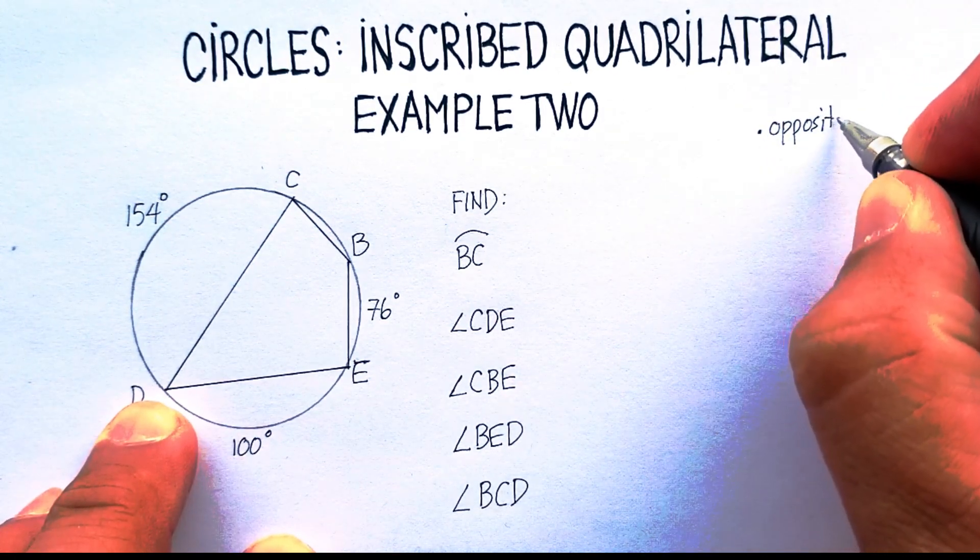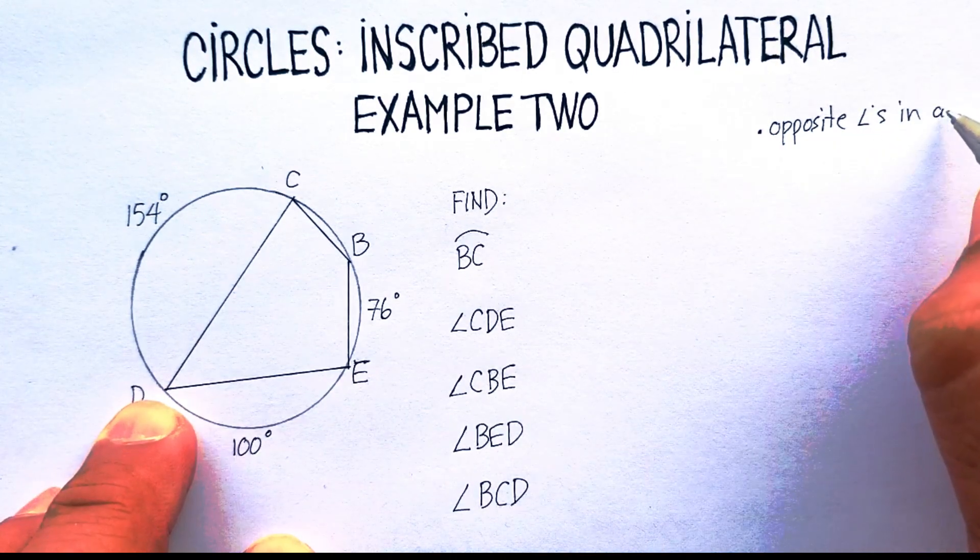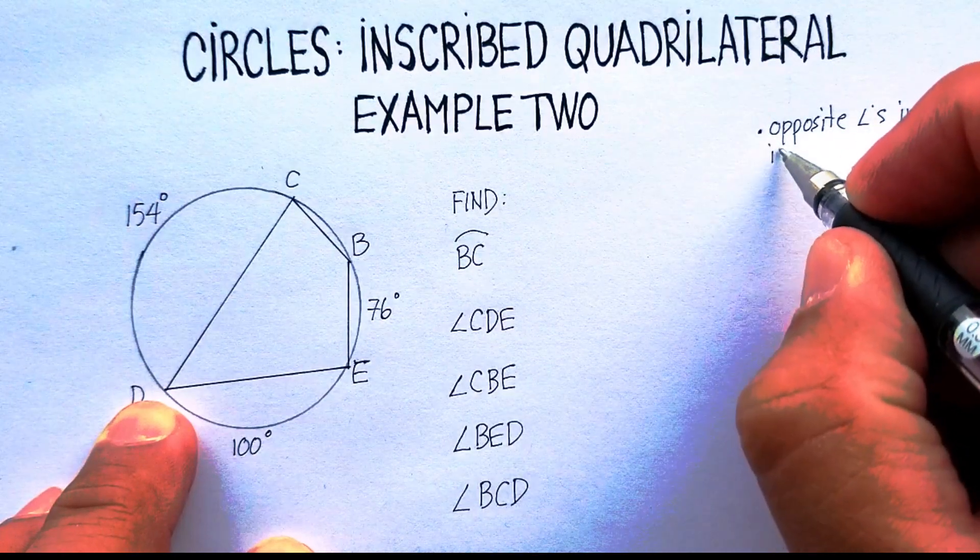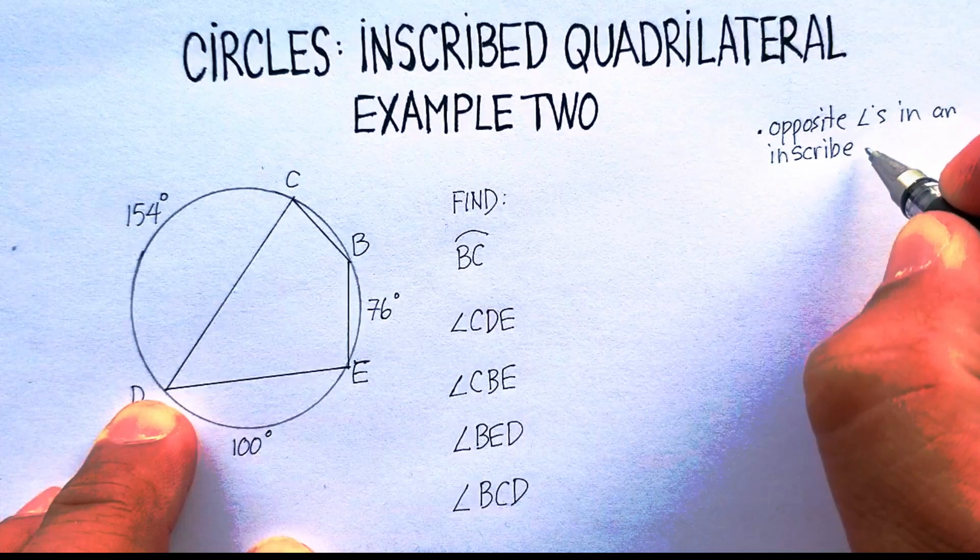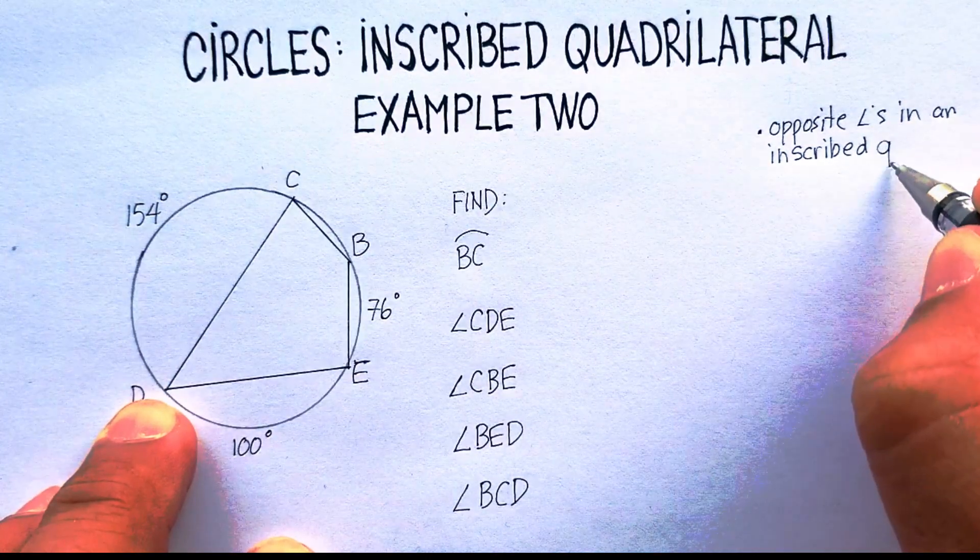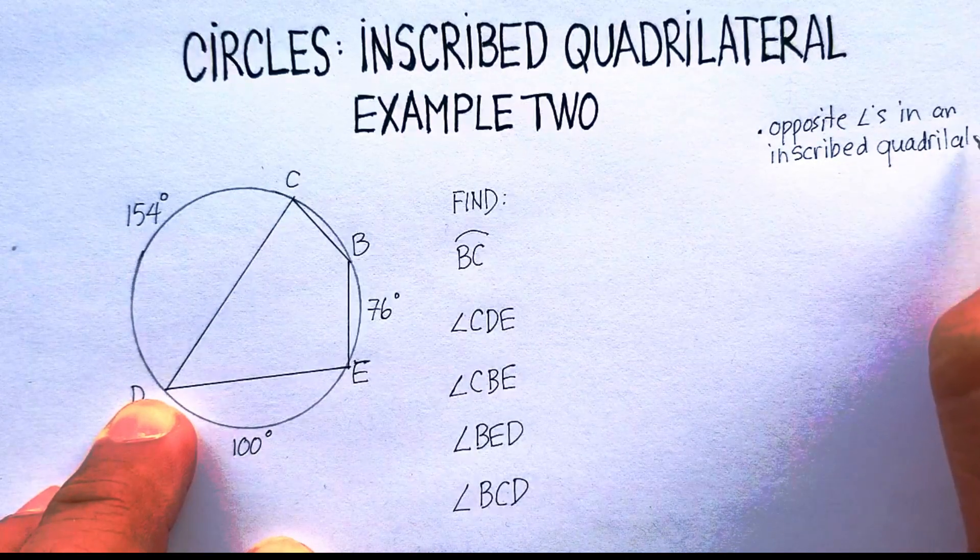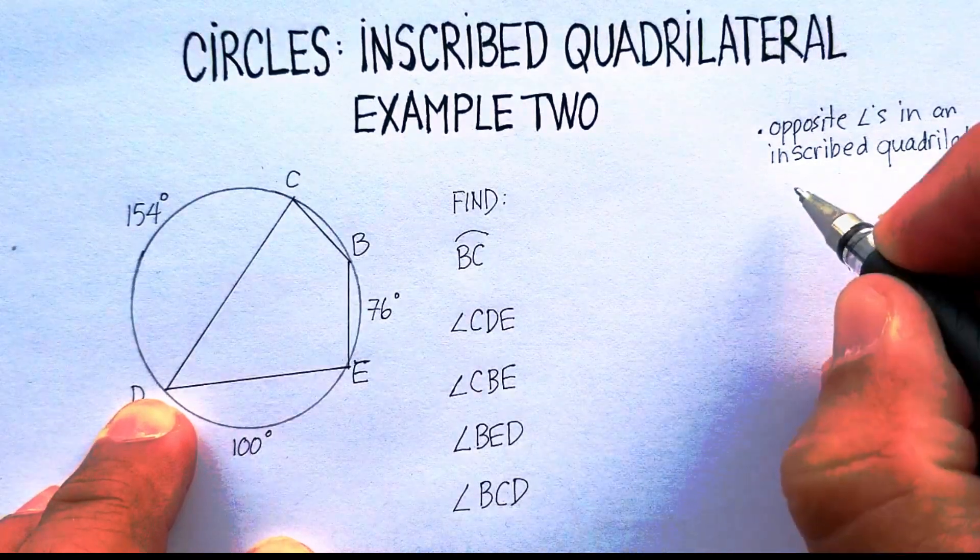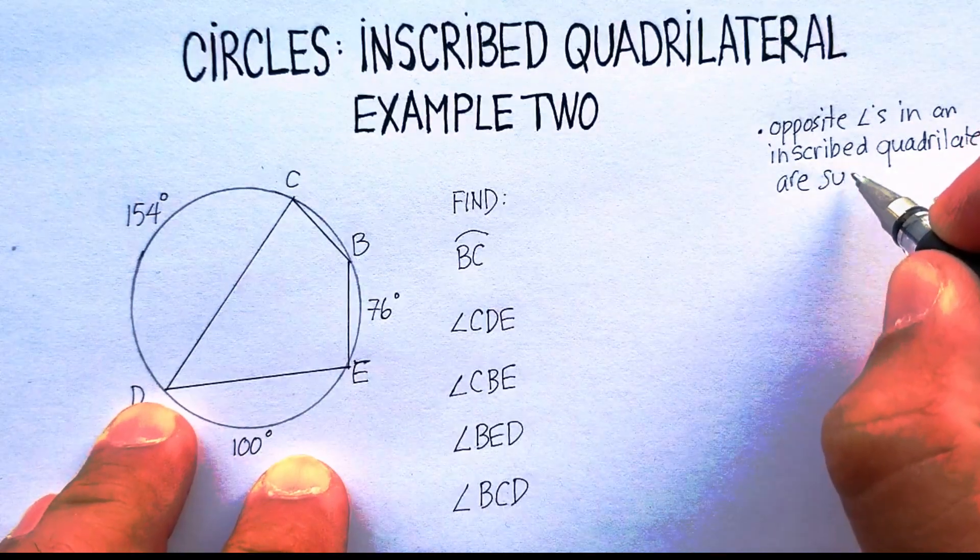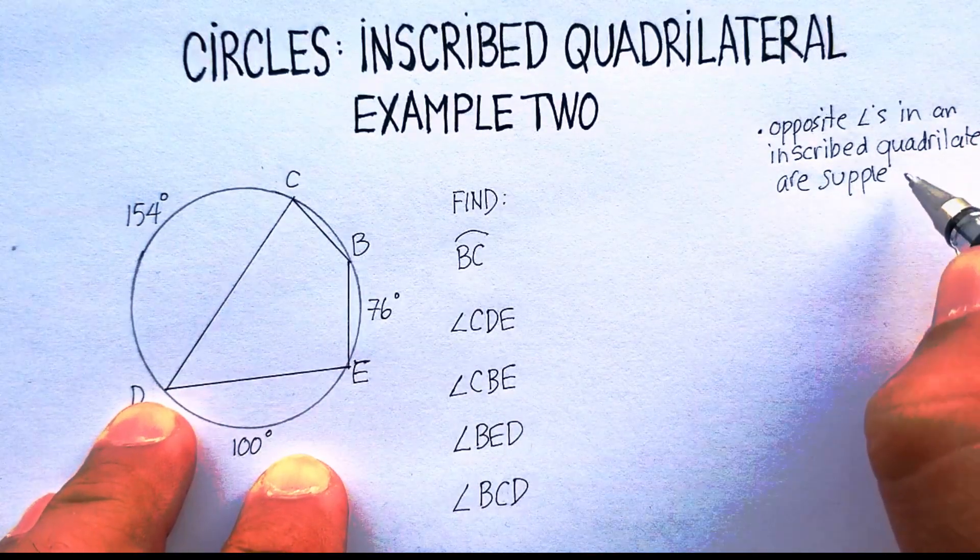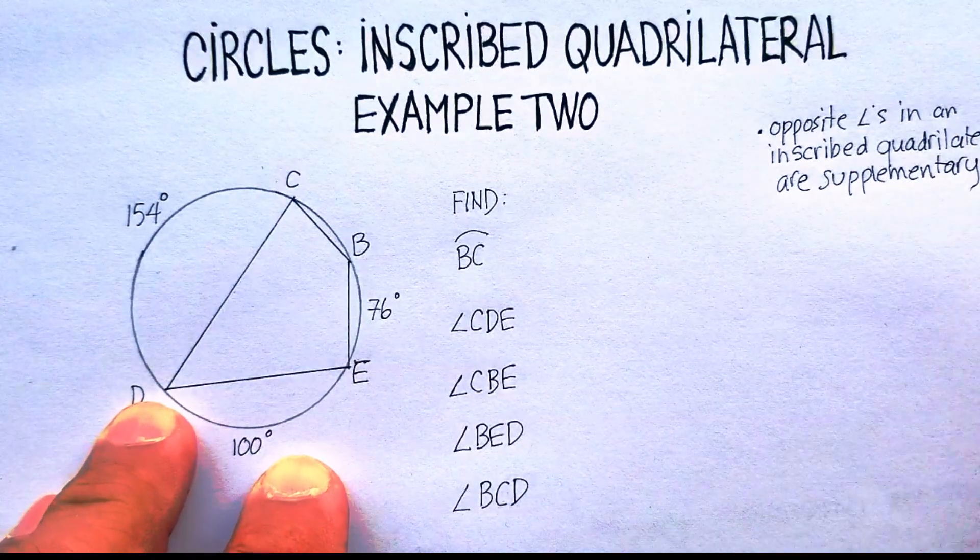Opposite angles in an inscribed - now remember, it has to be inscribed, not just any quadrilateral, but an inscribed quadrilateral are supplementary. Now, remember what that means. They add up to 180 degrees, right? Supplementary. Okay, so that's one thing I know.